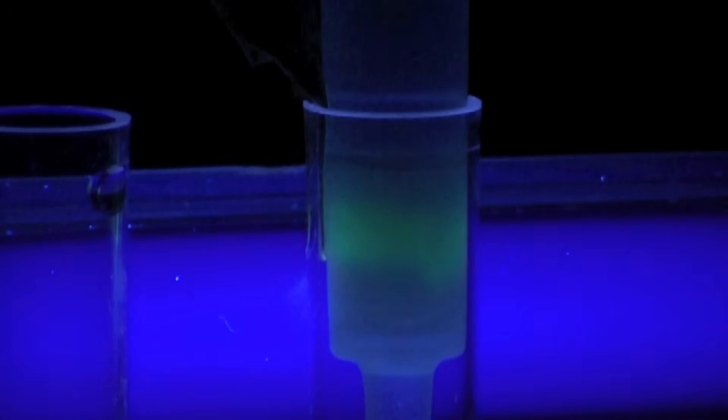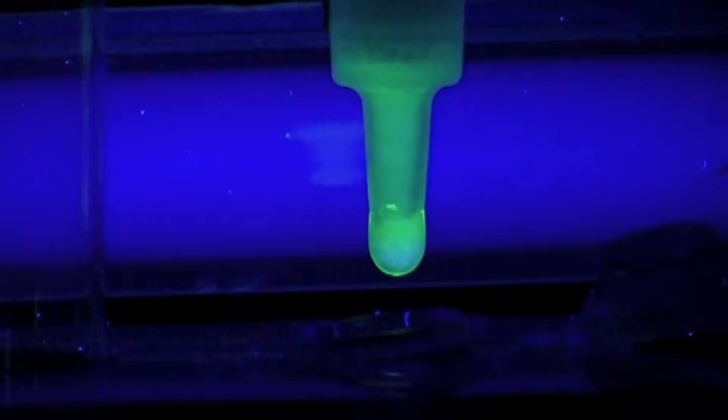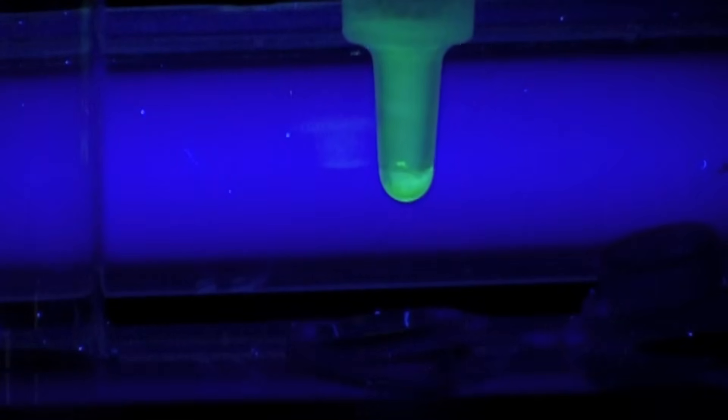Observe as the band of GFP moves down the column. As the first drops of GFP appear at the tip of the column, you may wish to collect the sample in a microtube for more convenient storage.